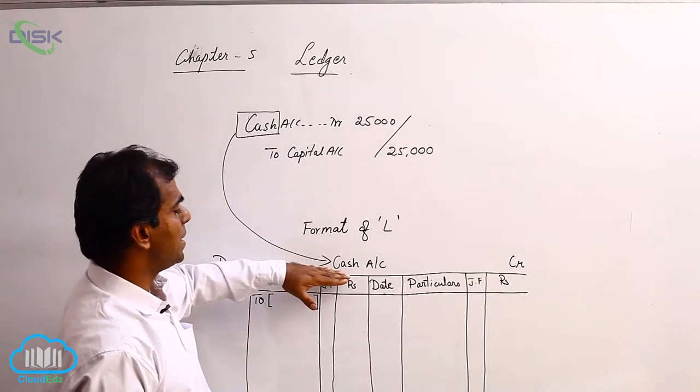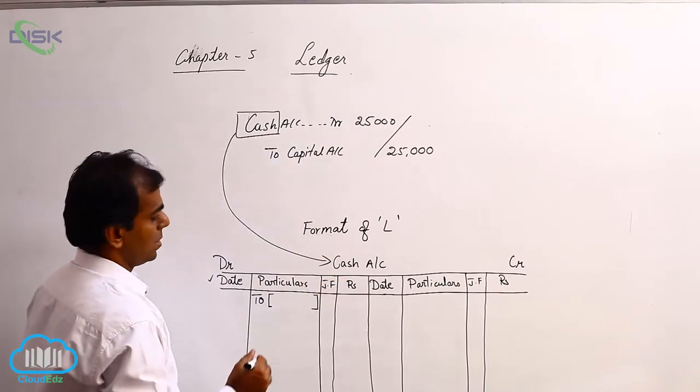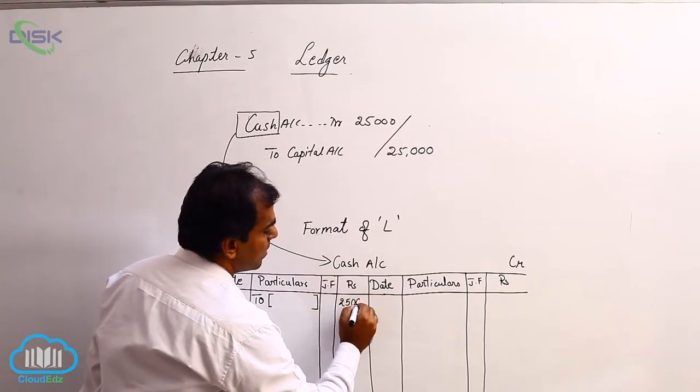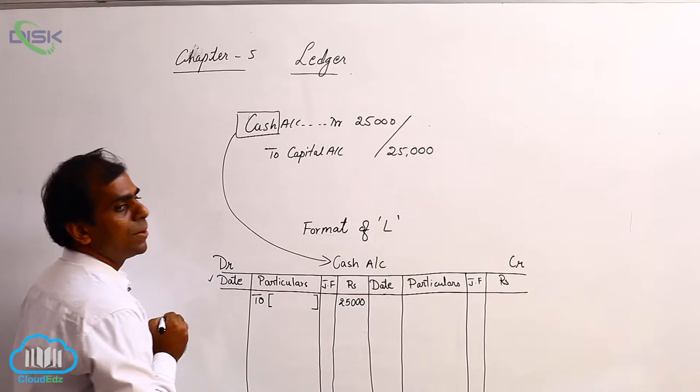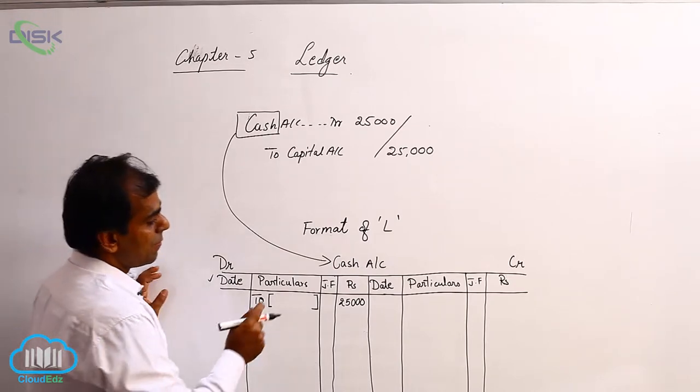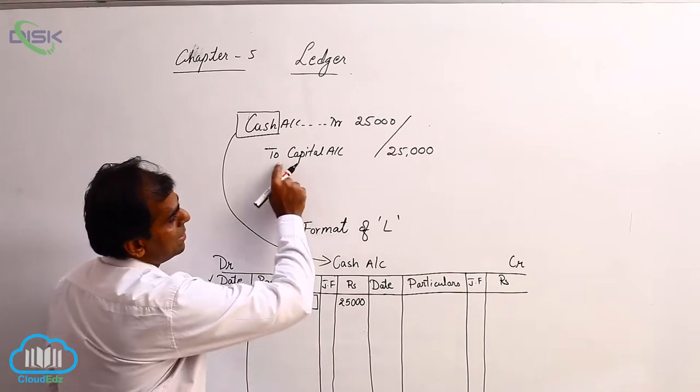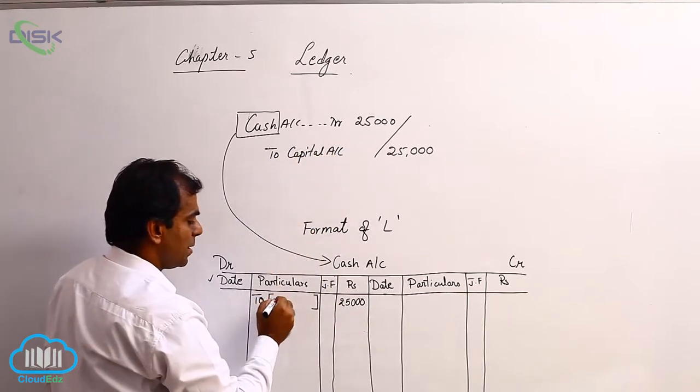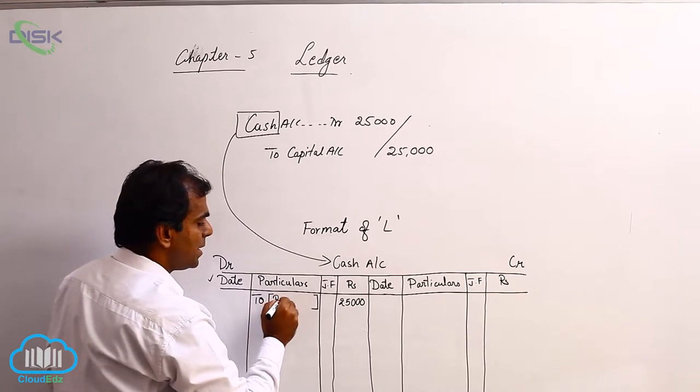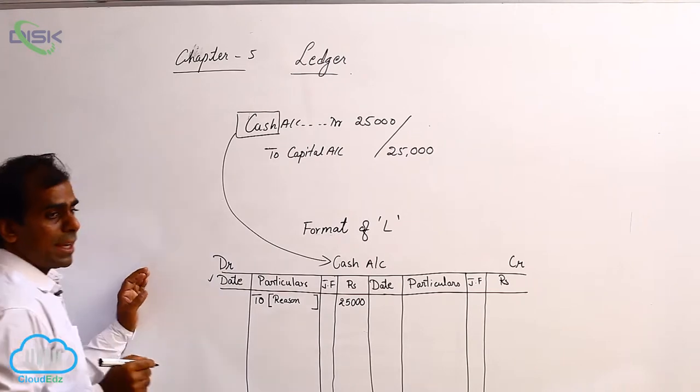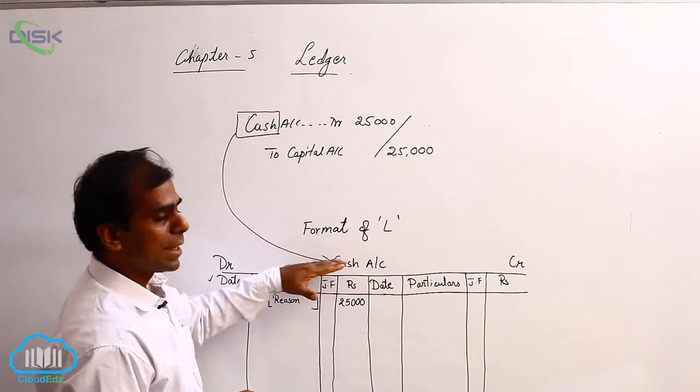Similarly, in the account of cash, you are going to write 25,000 on the debit side of the amount column. Now, why are you debiting this cash? The reason comes from your journal entry. It is because of capital. So, that reason we are writing here as why we are debiting this cash account.